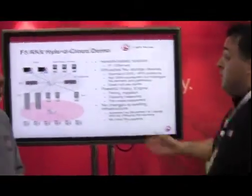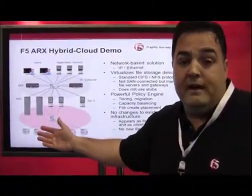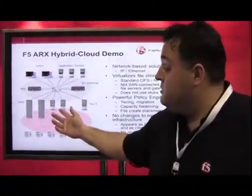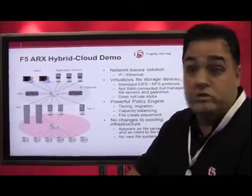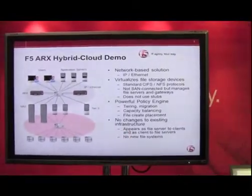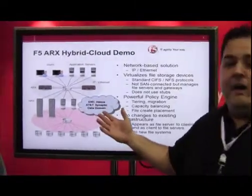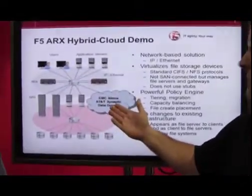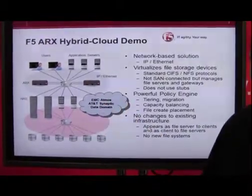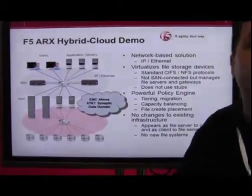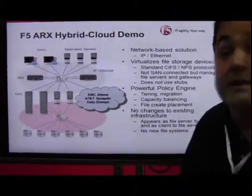Basically what you're seeing here is a tier one — this could be a Celera or VNX. Tier two could be an Isilon, Data Domain, or CIFS with Atmos. And then here with tier three, you basically now have an archive tier with the cloud — EMC Atmos, AT&T Synaptek. You could even have a Data Domain NFS export within a CIFS namespace by way of the ARX Cloud Extender.